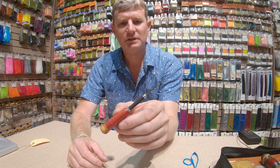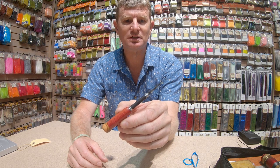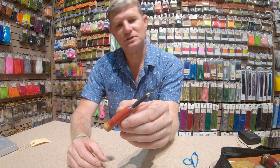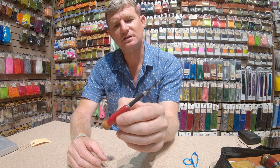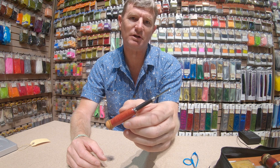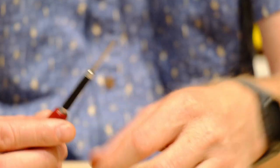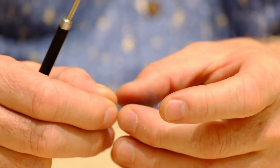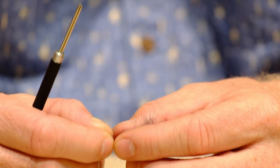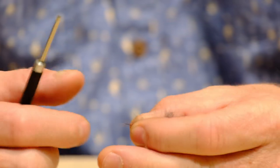I want to introduce a CDC spinner twister. These tools are bespoke made by a local gent. It's a simple tool great for creating small tufts of CDC for caddis underwings, flowers, and other uses.